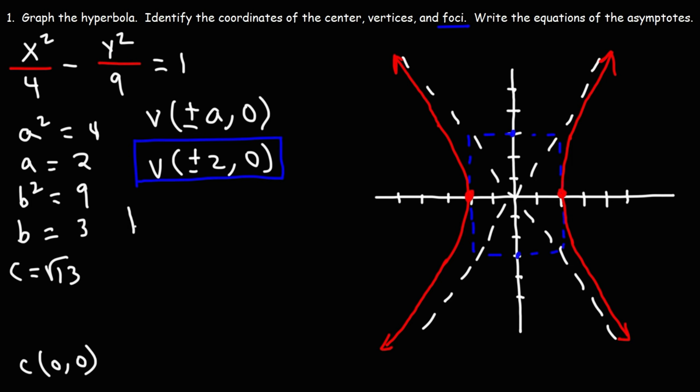Number three: graph the hyperbola. This time it's not centered at the origin. Here we have x minus 3, so the x-coordinate of the center is positive 3. Here we have y plus 2, so the y-coordinate of the center is negative 2. The center is at (3, negative 2). A squared is 4 so a is 2, b squared is 9 so b is 3. For c: a squared is 4, b squared is 9, 4 plus 9 is 13, so c is the square root of 13.